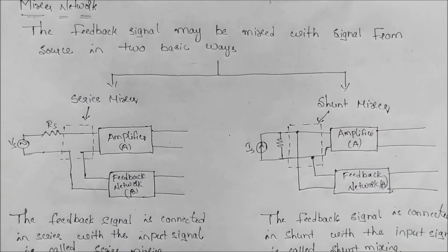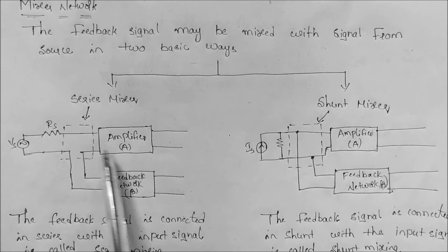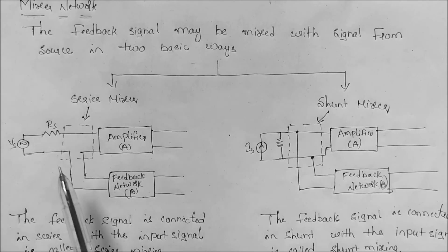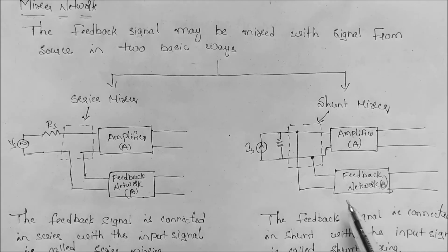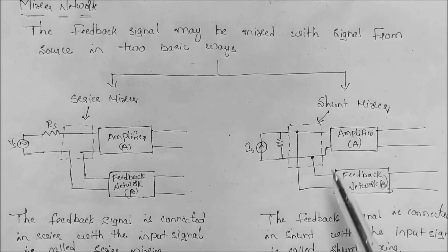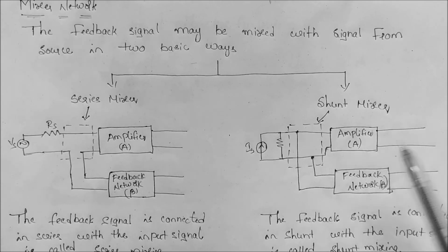Now, the mixer network. The feedback signal may be mixed with the source signal in two basic ways: series mixing and shunt mixing. In series mixing, the feedback signal is connected in series with the input signal. In shunt mixing, the feedback signal is connected in shunt — in parallel — with the input signal.